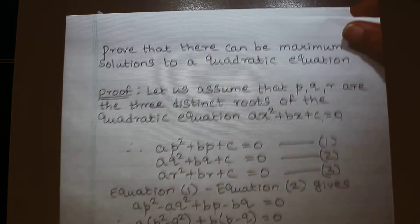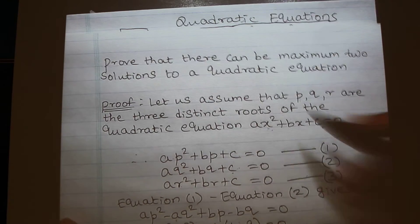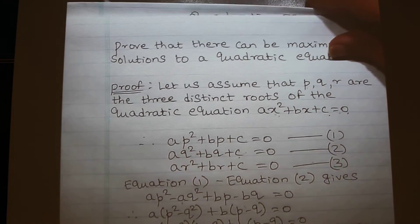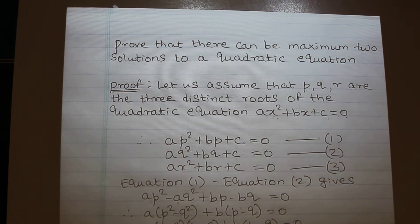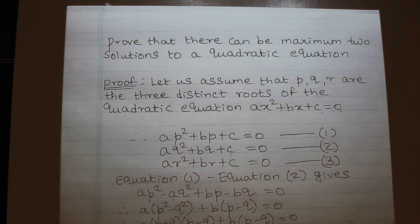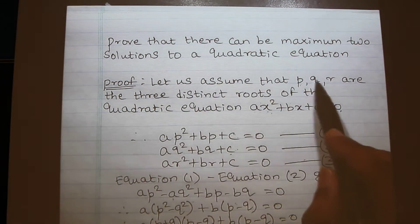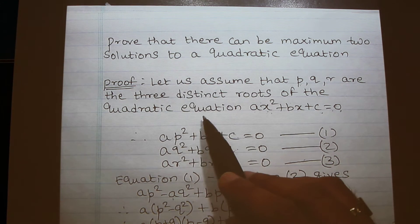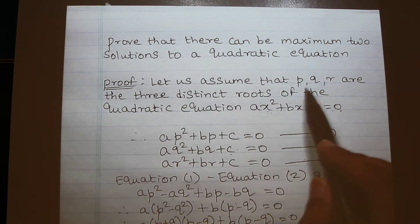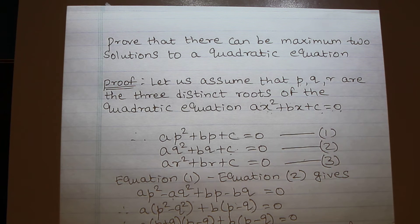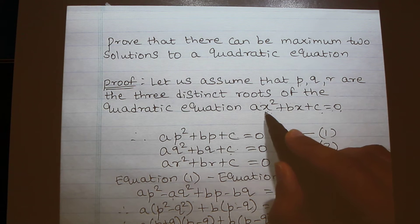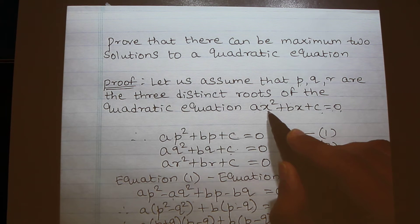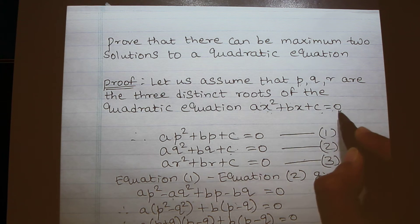Now we will see that in a quadratic equation there can be maximum two roots. Let us prove this by contradiction. So let us assume that there are three possible roots to the quadratic equation, and let us call them p, q, and r. The roots of the equation mean that if I substitute p in place of x, the left-hand side will be equal to the right-hand side.